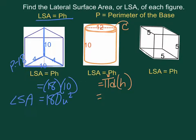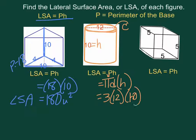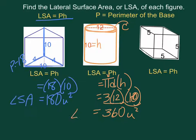Let's estimate here, using 3 for pi, times our diameter of 12. Our height — remember, it's the distance between our bases — so 10 is our height here. 3 times 12 is 36, times 10 is 360 square units. So that's the area of the label on that can.